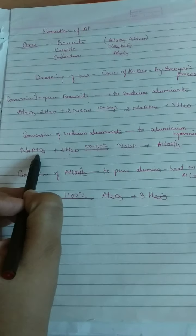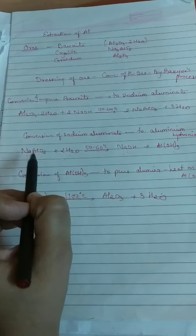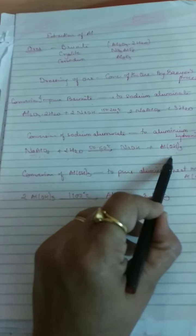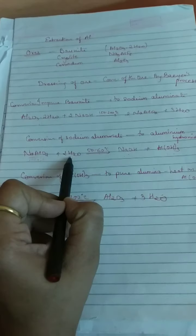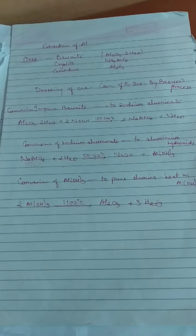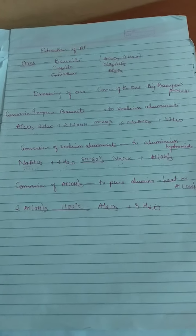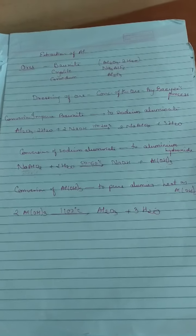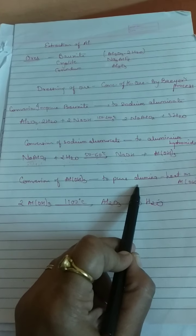The sodium aluminate must be hydrolyzed and diluted. If it remains concentrated, we would get aluminium hydroxide in liquid form rather than crystals. Water is added to sodium aluminate, and crystals of aluminium hydroxide are added to it for further precipitation. This process is called seeding.